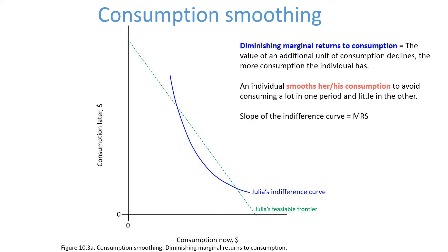Let's take point C. At C, the marginal rate of substitution is high. You can see that the slope of her indifference curve is very steep at C. She's not consuming much now. Diminishing marginal returns means that she prefers to increase consumption now when she is at point C.